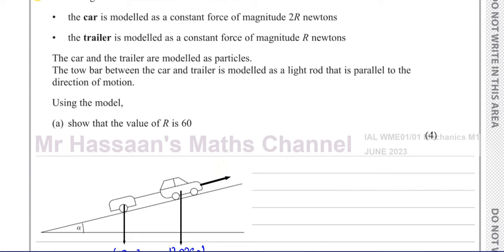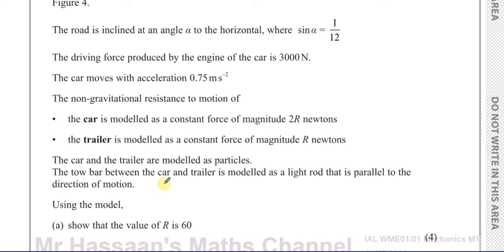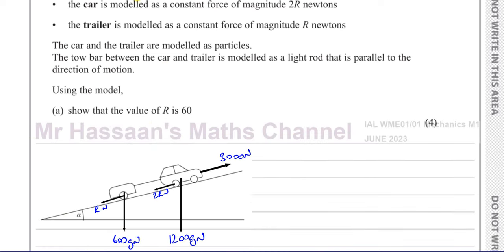The driving force is 3000 newtons. The resistances to motion act against the motion — since it's going up, they act down the slope. For the car it's 2R newtons and for the trailer it's R newtons. We also have the reaction force from the surface, perpendicular to the plane. I'm going to call it N rather than R this time, since R is already used for resistance. So that's N for the car and N for the trailer.